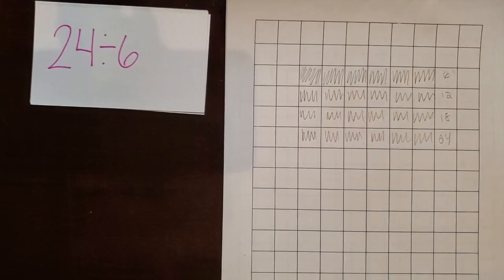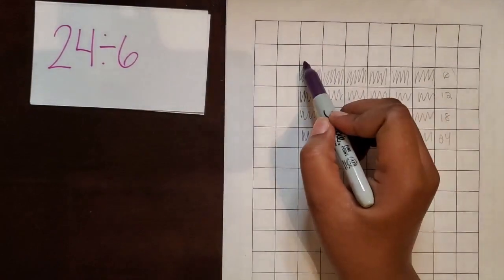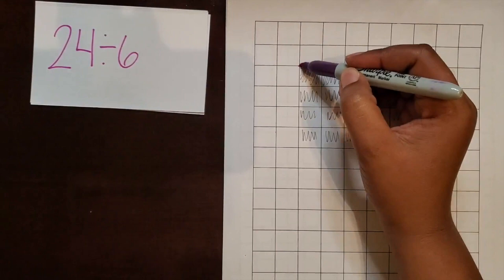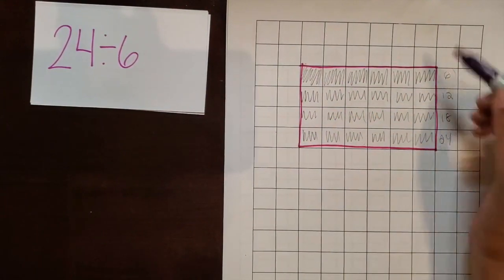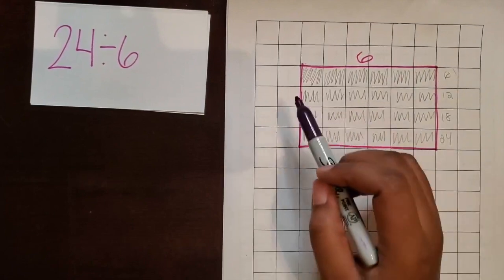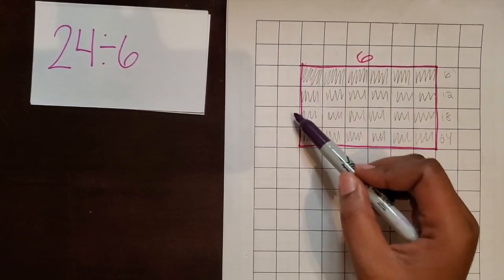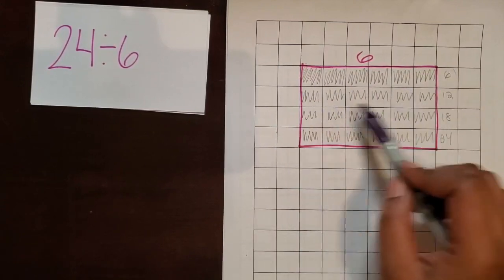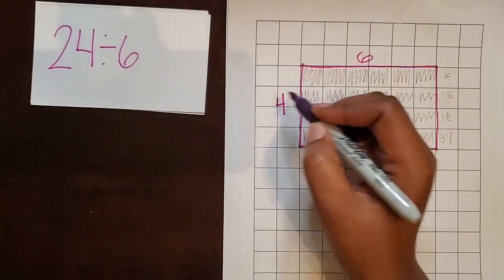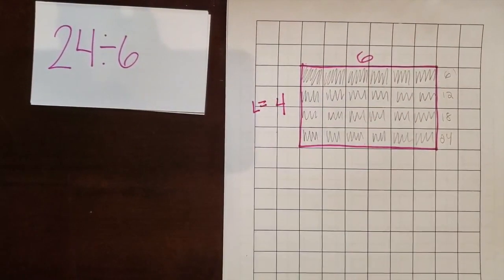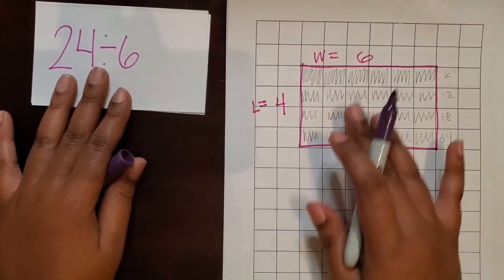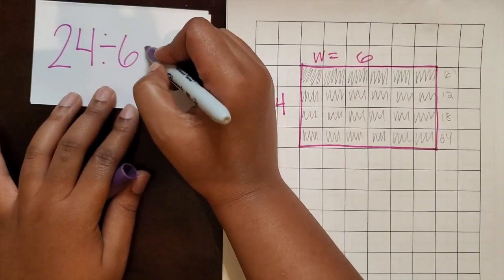Now that we have 24 square units, I'm just going to outline that rectangle. And the width was 6 square units. Now I can count to see how many rows of 6 made 24. 1, 2, 3, 4. So that means the length is 4. So the width was 6, the length was 4. So 24 divided by 6 equals 4.